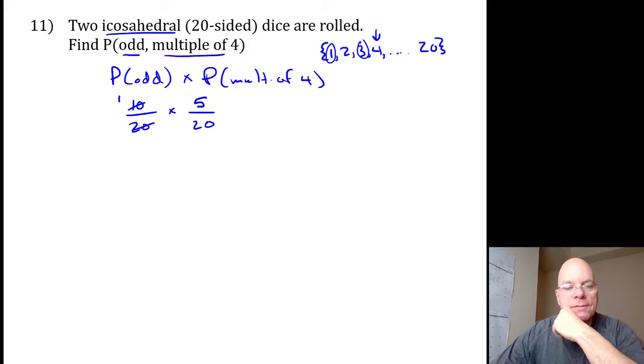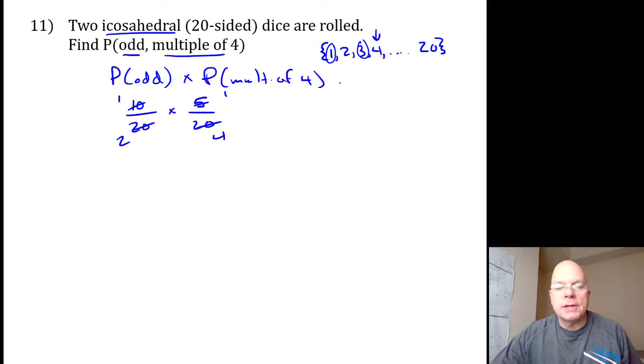And so this simplifies to half and this simplifies to a fourth, and so the probability of getting odd then rolling a multiple of four would be one eighth.